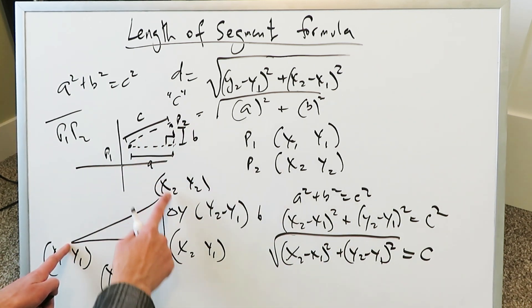And that equals a certain c squared which is the length of the segment P1, P2. The length of that segment is c. c therefore must be equal to the square root of all of this, which is exactly what we're looking at.